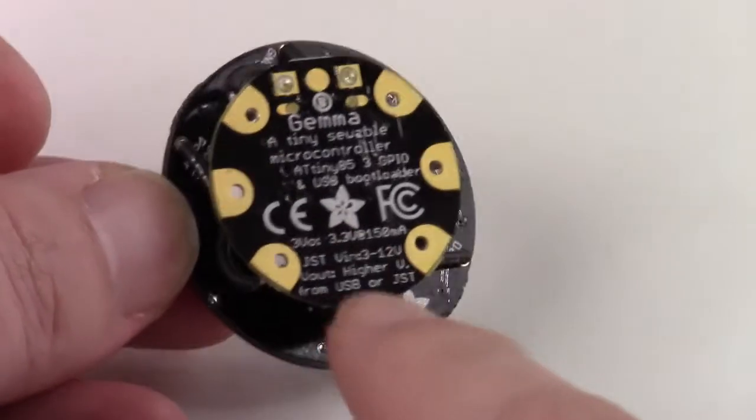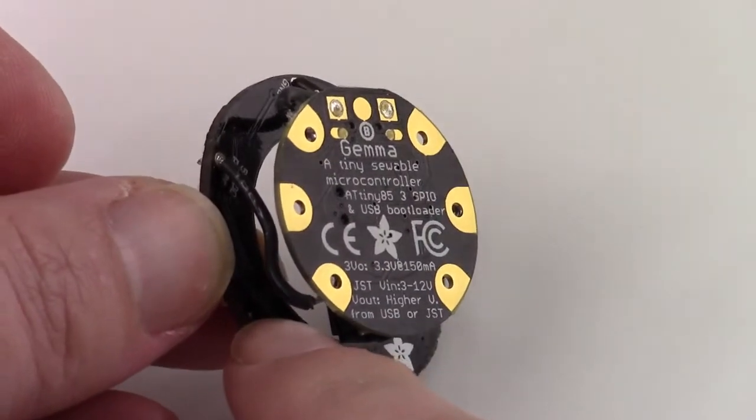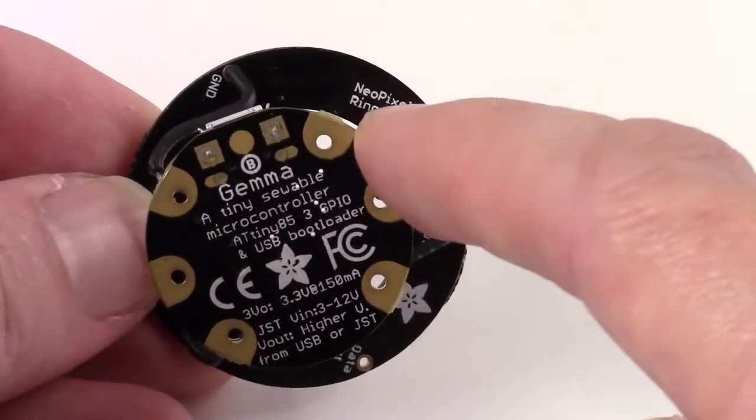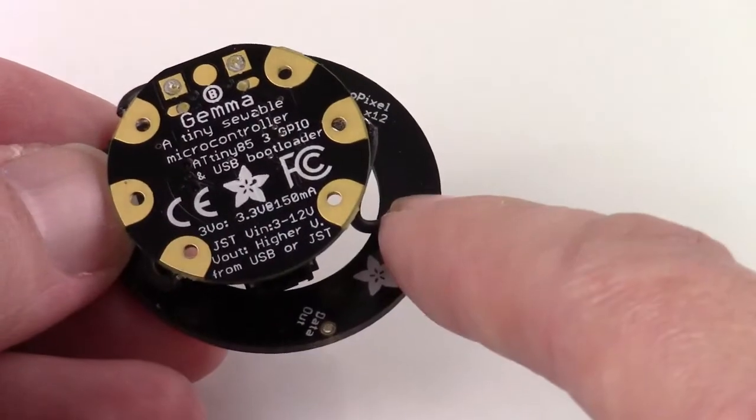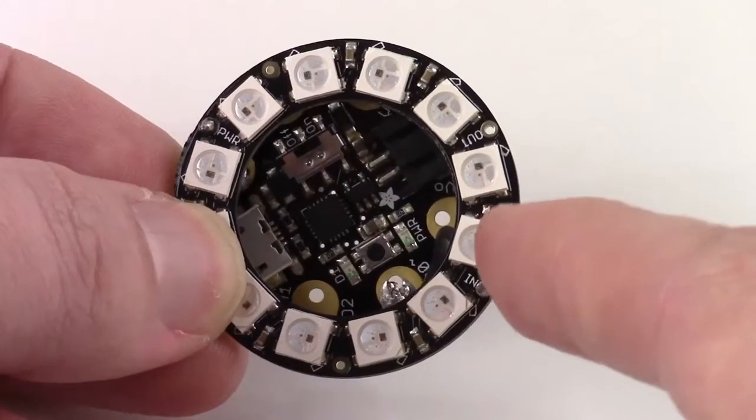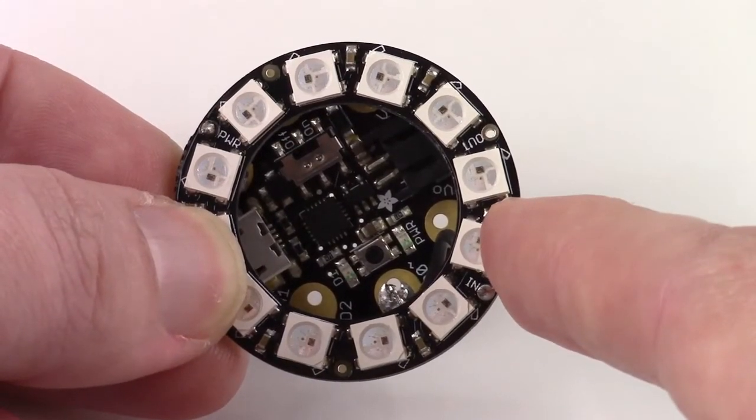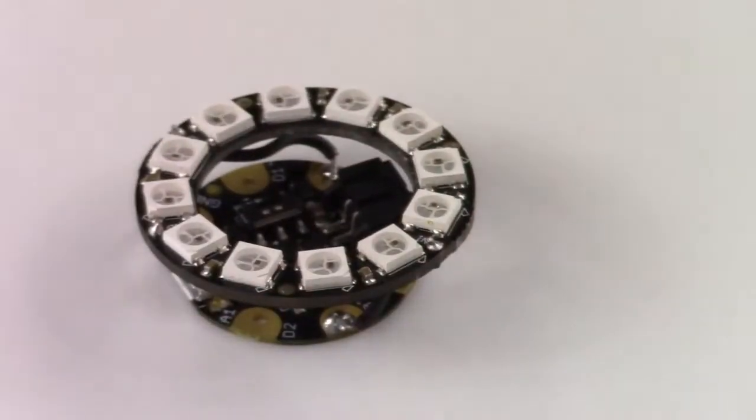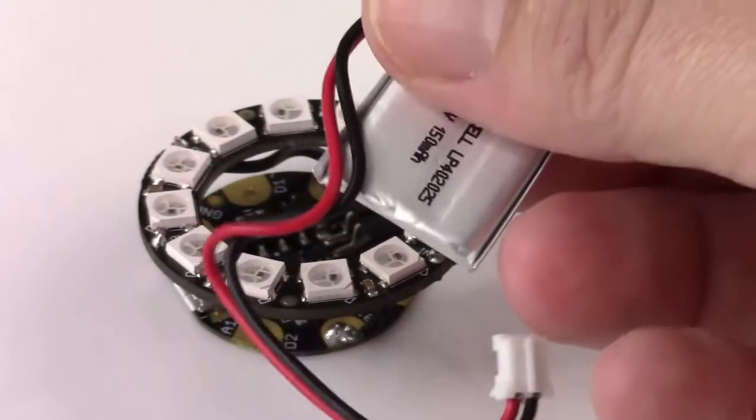You connect the Vout on the Gemma to the Vn on the NeoPixel Array. Connect the ground on the Gemma to the ground on the NeoPixel Array. And you connect D0 on the Gemma to the input on the NeoPixel Array. Three solder joints is all it takes.